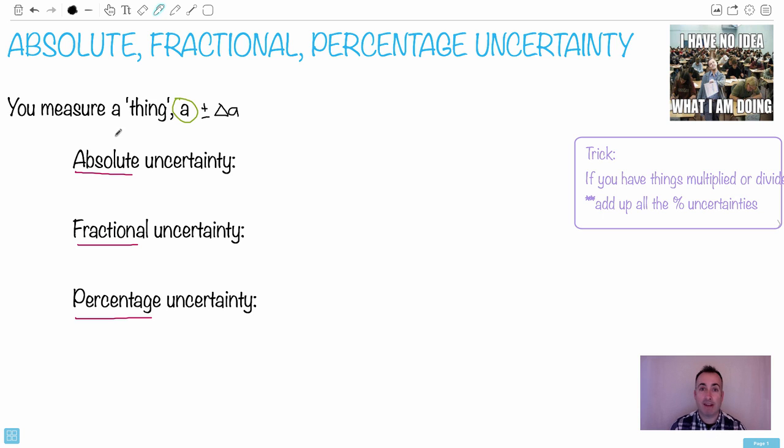So the definition of absolute uncertainty, it's super easy. The absolute uncertainty is just plus or minus delta A. In other words, the absolute uncertainty is the actual value of your uncertainty. So if you're measuring a distance of like 2.0 meters, then the uncertainty would be like 0.1 meters. So it's an actual literal value.